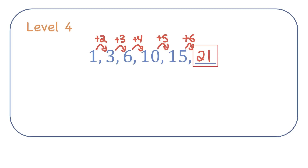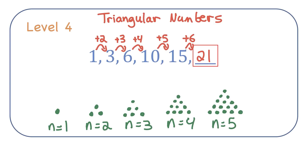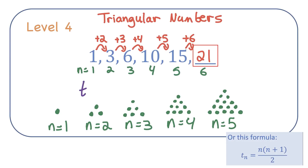This sequence of numbers is known as triangular numbers. They're called this because for each number in the sequence, I could draw the corresponding number of dots and form them into an equilateral triangle. The first number is 1 dot, the second was 3 dots, and so on. The third number in the sequence is 6 — there are 6 dots, forming a 3 by 3 by 3 equilateral triangle. The fifth term is a 5 by 5 by 5 equilateral triangle made up of 15 dots. You may want a formula: the value of term n equals the previous term plus n.